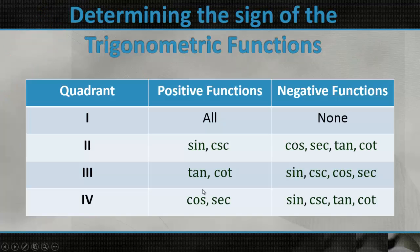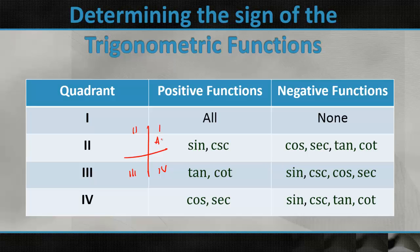As far as determining the signs of the trig functions based on quadrant: in quadrant 1, everything is positive. In quadrant 2, sine and cosecant are positive. In quadrant 3, tangent and cotangent are positive. In quadrant 4, cosine and secant are positive. In each quadrant other than quadrant 1, only that trig function and its inverse are positive.